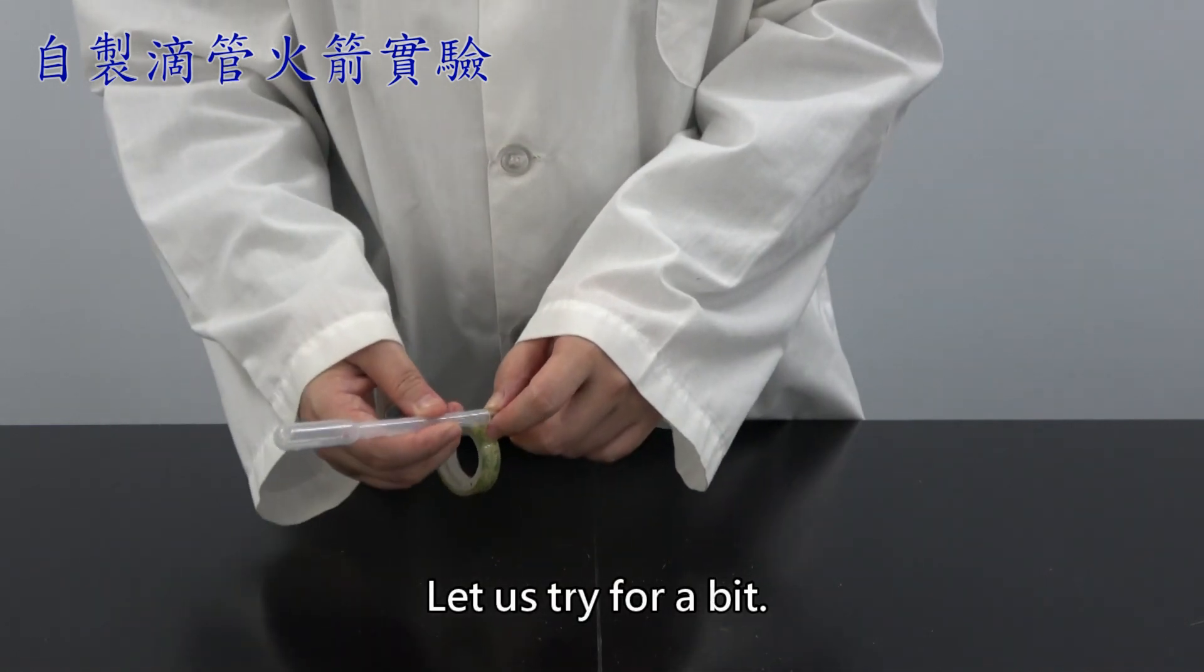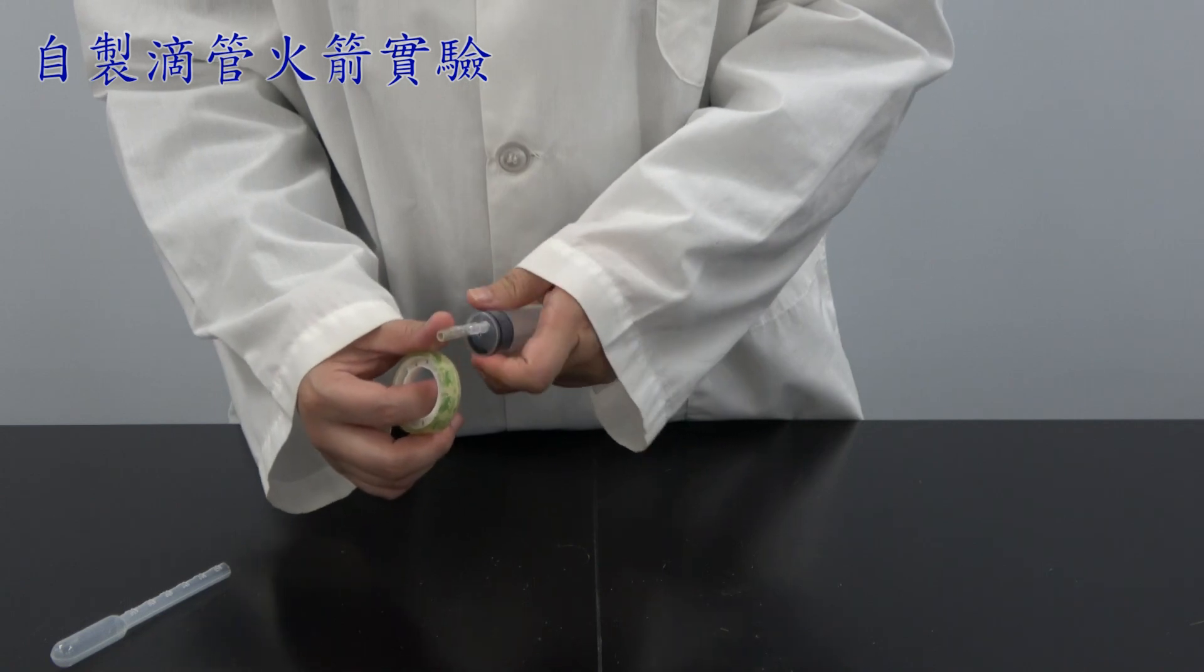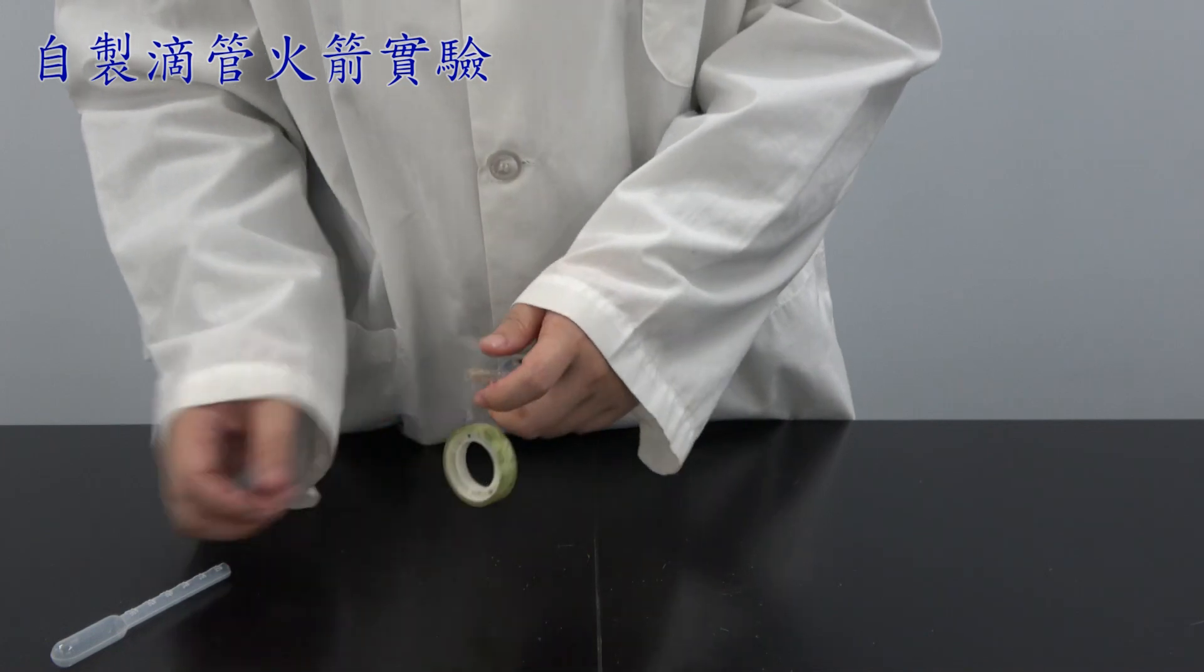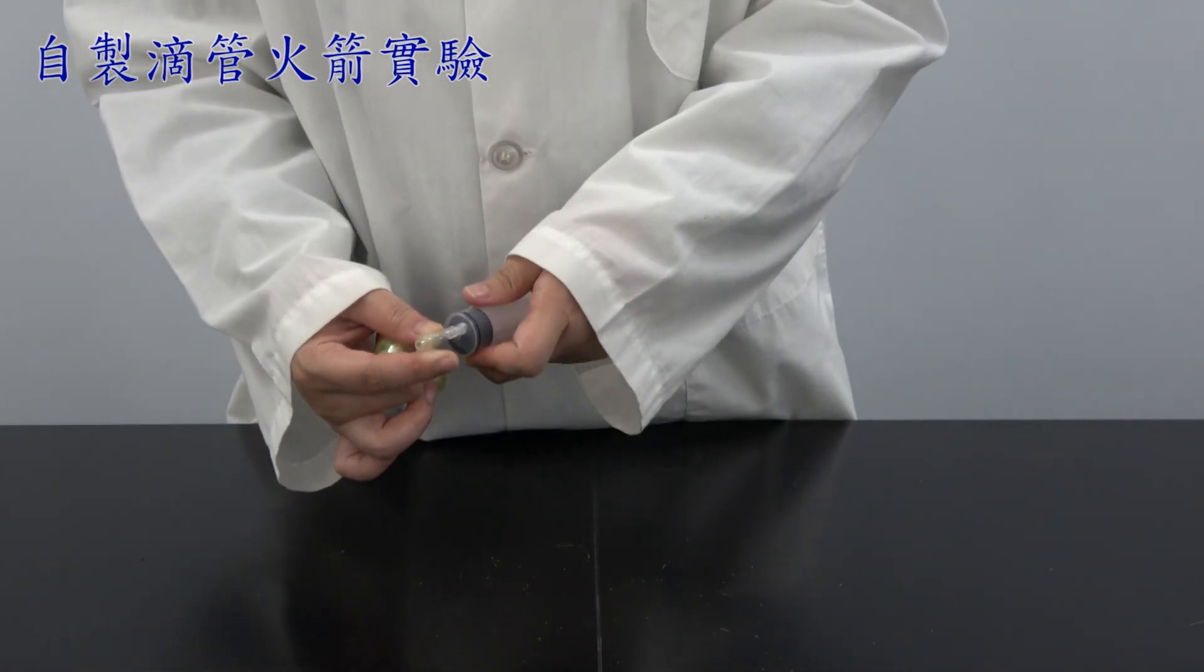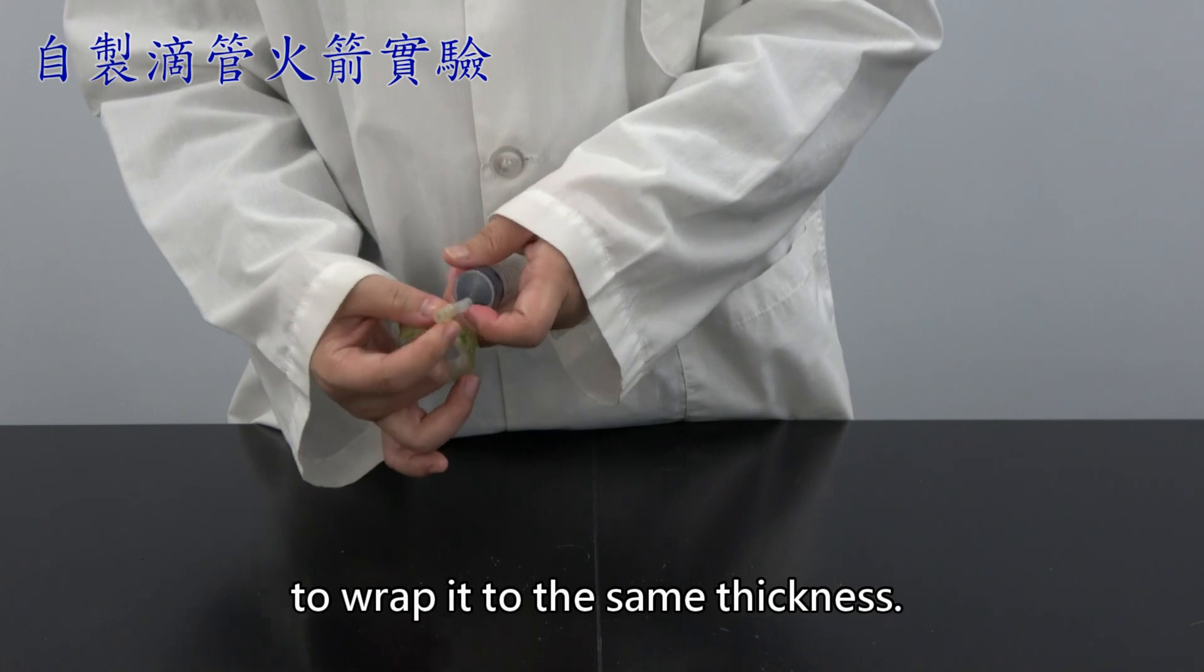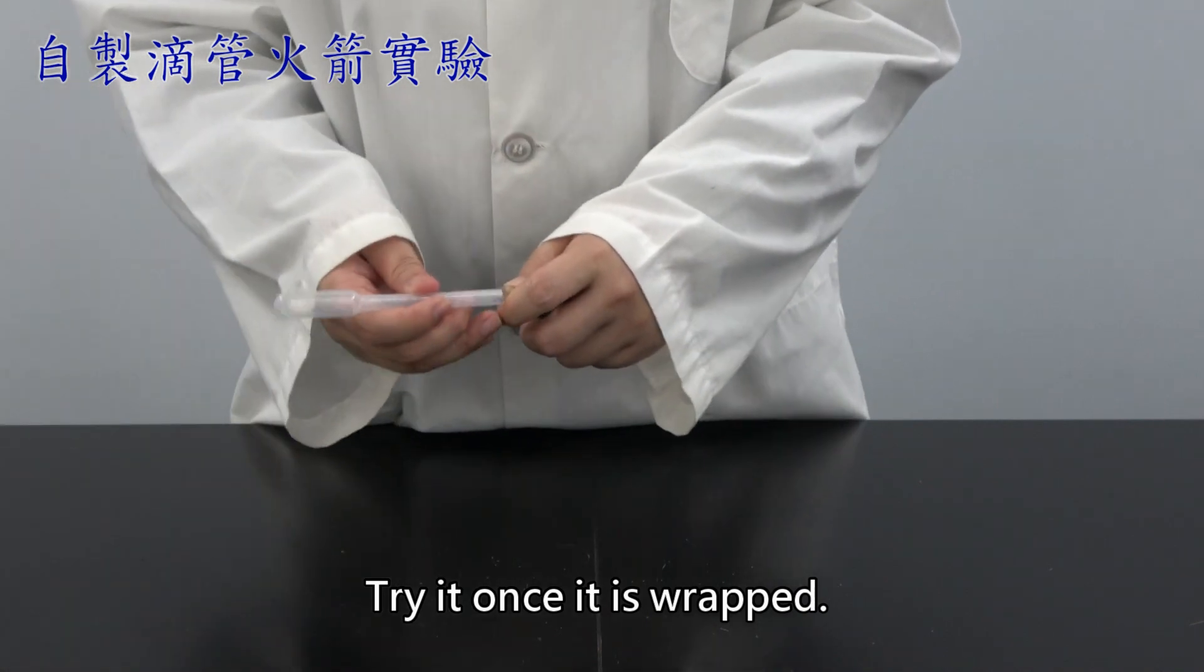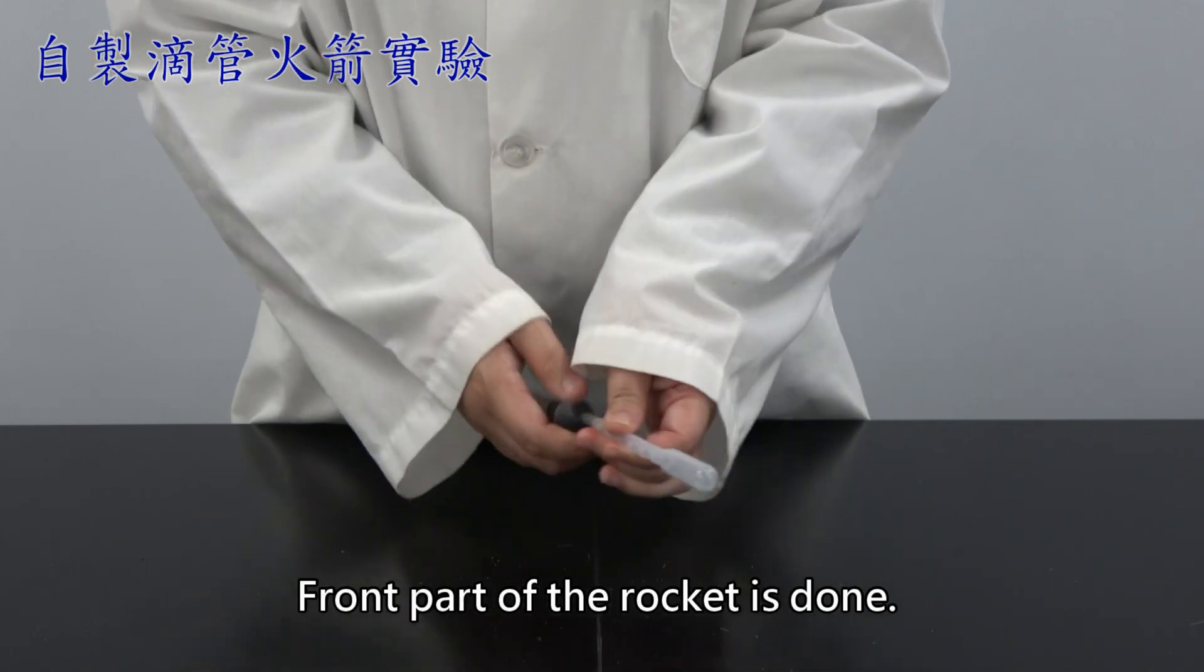Let us try for a bit. Still, not enough. Tie it tighter. You can test it as you do it. Let us try again. Once there about the same girth, finish up with the tape to wrap it to the same thickness. Try to get it even, some wider, some thicker, some thinner that will make it loose. Try it once it is wrapped. Success! It is quite tight. Cannot pull out. Front part of the rocket is done.